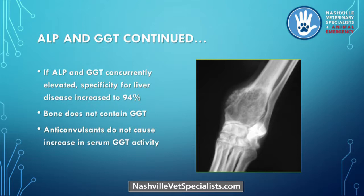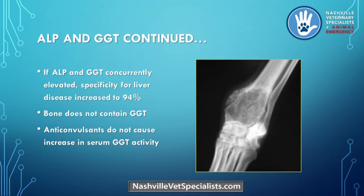If alkaline phosphatase and GGT are both elevated on your panels, your specificity or ability to rule in liver disease almost approaches 100%. Bone does not contain GGT, so a dog with osteosarcoma should not have an elevated GGT unless it has concurrent liver disease.